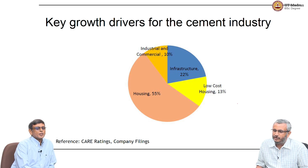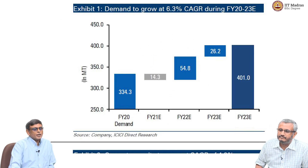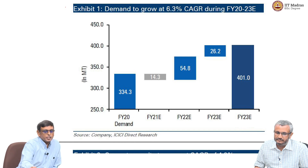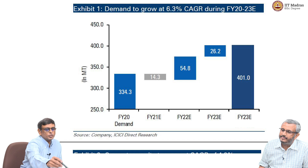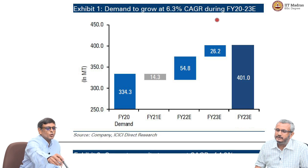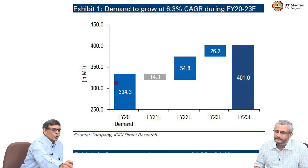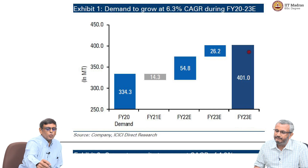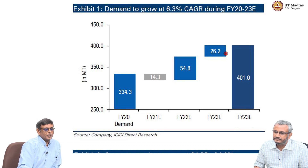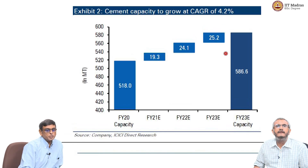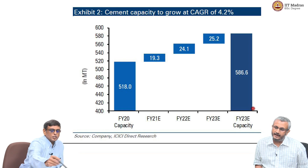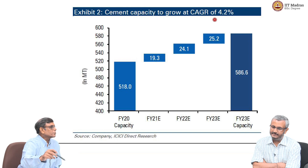The key growth drivers are basically the affordable housing segment — housing looks like a big driver. The expectation is that demand in this sector is going to grow at 6.3 percent CAGR — compound annual growth rate — between FY20 and FY23, from 334.3 million tons to 401 million tons. Accordingly, companies have tried to match it in terms of capacity: 518 million tons going to 586 million tons, with capacity growing at 4.2 percent to try to match the 6.3 percent demand growth.